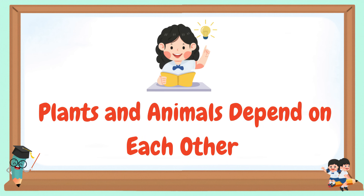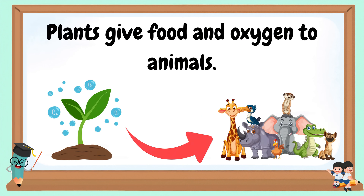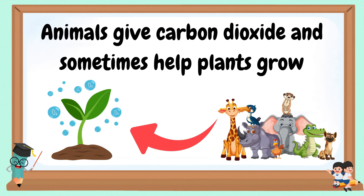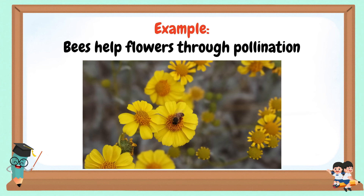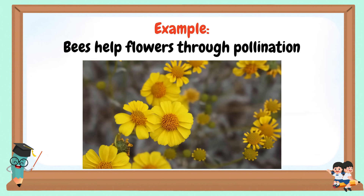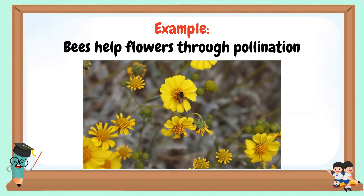Plants and animals depend on each other. Plants give food and oxygen to animals. Animals give carbon dioxide and sometimes help plants grow — for example, bees help flowers through pollination.